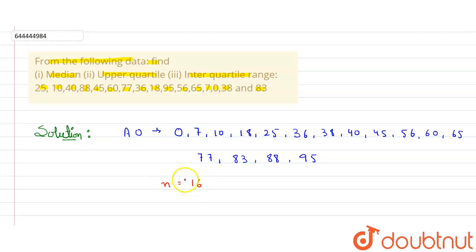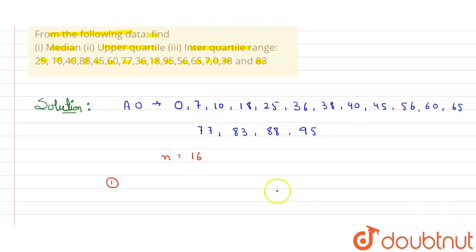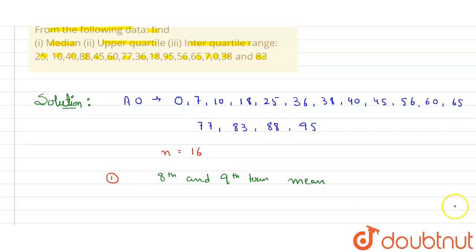So first step, we need to find the median. The number of elements are even in number, so it will be the 8th and 9th term. So what is 8th and 9th term here? Look, it will be 1, 2, 3, 4, 5, 6, 7, 8th and 9th are 40 and 45.